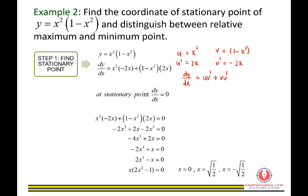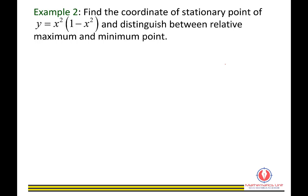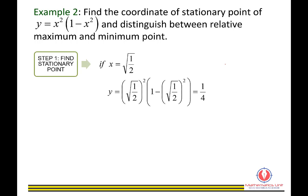We find the points using these three x values. For x equals 0, substituting into the equation gives y equals 0, so the first stationary point is (0, 0). For x equals set 1 over 2, substituting gives y equals 1 over 4, so the second stationary point is (set 1 over 2, 1 over 4).